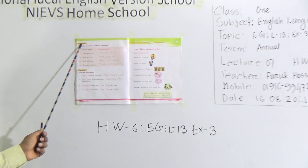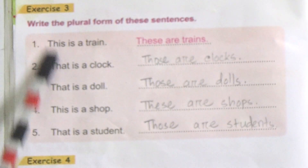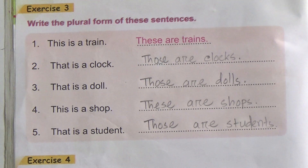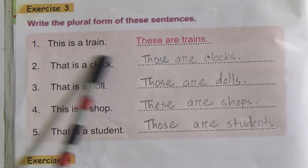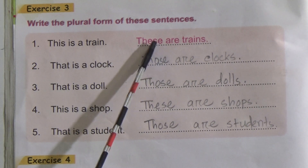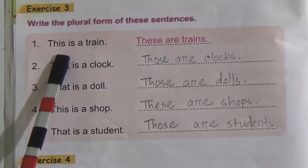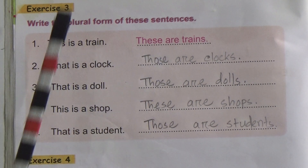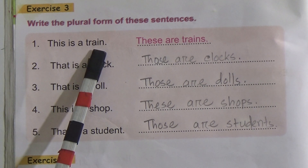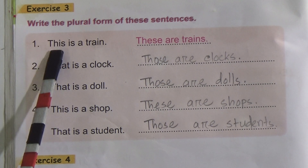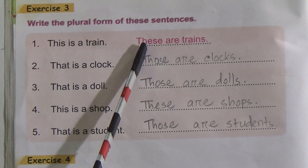This is Exercise 3: Write the plural form of these sentences. That means we have to write the plural form of these sentences. In exercises 1 and 2, you already have the idea about where you will have to use 'this', 'these', and 'those'. Number 1 is done for you. 'This is a train' — its plural form is 'these'.